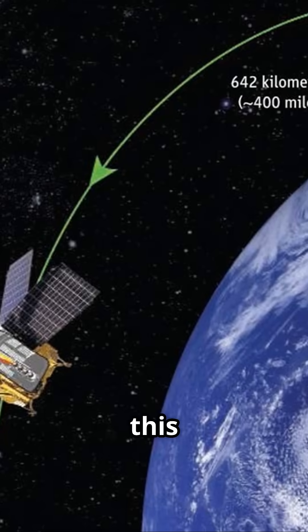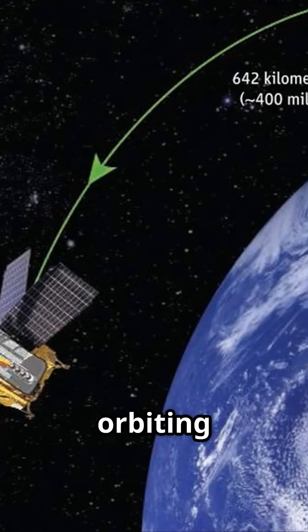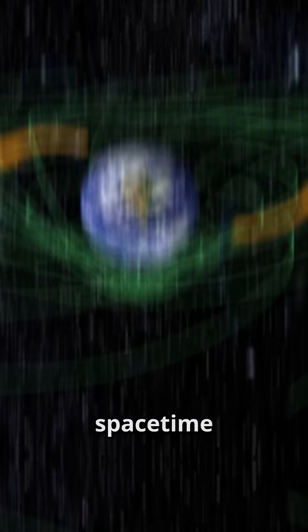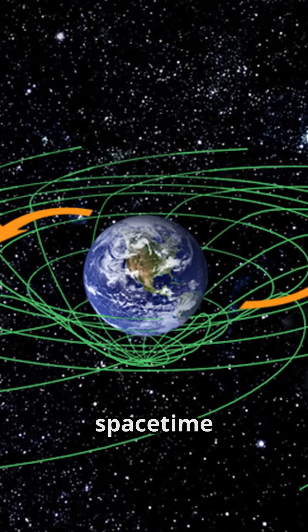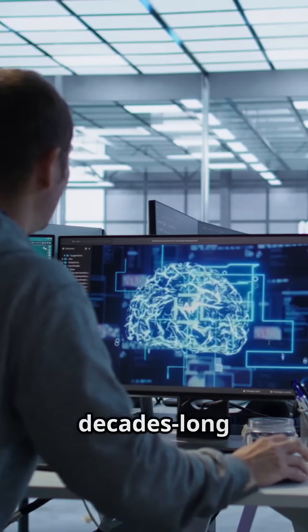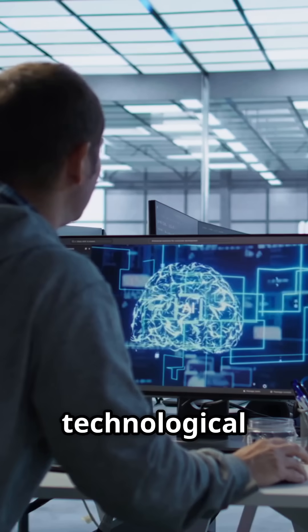Picture this: Four ultra-precise gyroscopes orbiting 642 kilometers above Earth. Their goal? Measuring how Earth's gravity warps space-time and how its rotation drags space-time along with it. Led by Stanford's Francis Everett, this decades-long effort faced immense technological challenges.